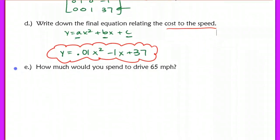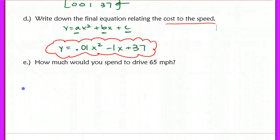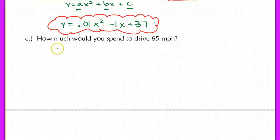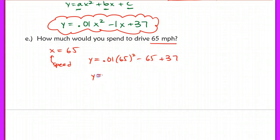Now the next question here, it says, how much would you spend to drive 65 miles per hour? So 65 miles per hour is a speed. Basically what they're telling us is plug in x equals 65 because x was defined way back in the beginning as speed. So now I can plug in 0.01 times 65 squared minus 65, 1 times 65, then plus 37.